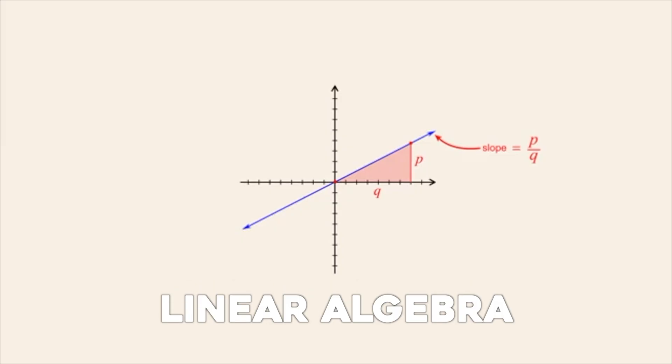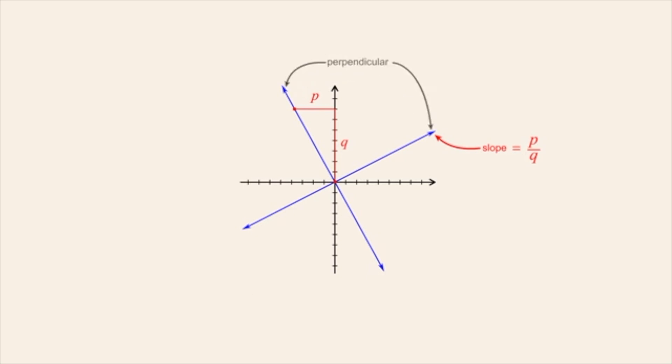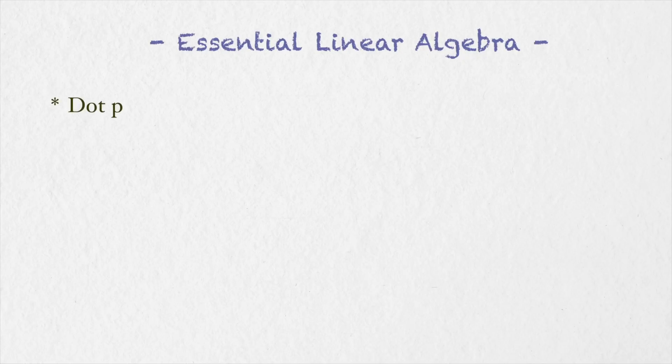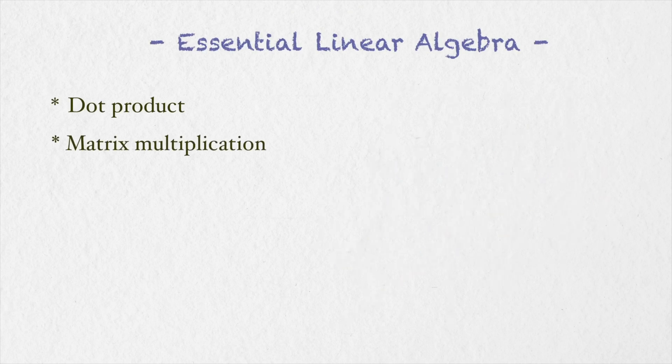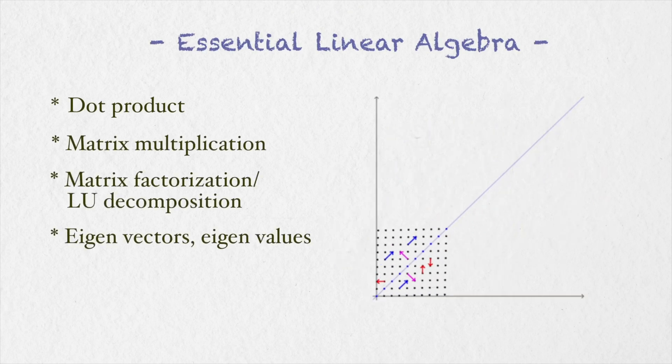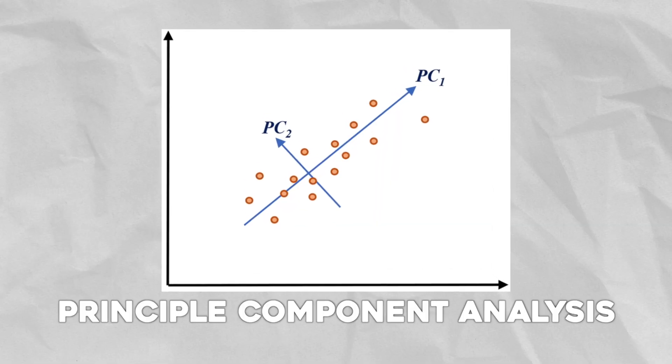The first important kind of math used in data science is linear algebra. It is a branch of mathematics dealing with vectors, matrices, and operations on them. Key concepts include dot product, matrix multiplication, matrix factorization, eigenvalues and eigenvectors, and singular value decomposition. You'll encounter linear algebra in several machine learning algorithms — for example, principal component analysis uses singular value decomposition to represent data in fewer dimensions, and linear algebra is also the backbone of all neural network calculations.